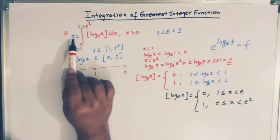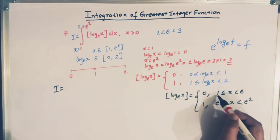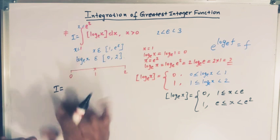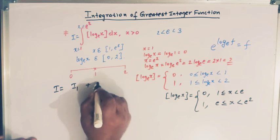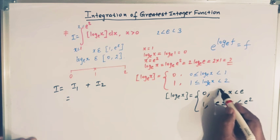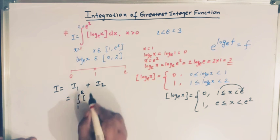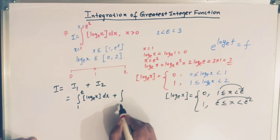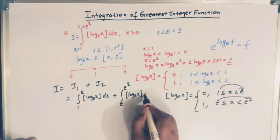Now let us return to the integral I. We split the range from 1 to e² into two parts: from 1 to e, and from e to e². This allows us to split the integral into the sum of two integrals, I1 and I2. I1 is the integral from 1 to e of the greatest integer of log base e of x dx, and I2 is the integral from e to e² of the greatest integer of log base e of x dx.